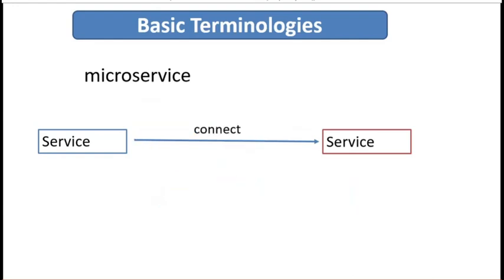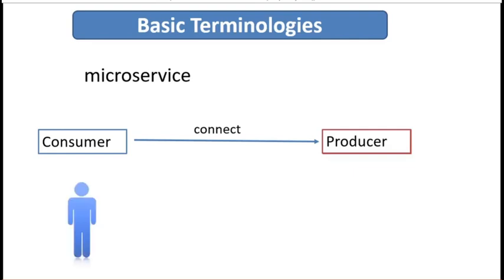To simplify, I will use only one service connecting to another. In this connection, there is always one consumer and one producer. For the consumer, I will use the blue box, and for the producer, I will use the red box color. For all four options we are going to discuss, we will stay at the consumer service area to see how we can connect to the other producer service privately.